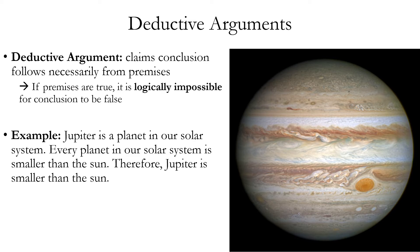Here's an example. Jupiter is a planet in our solar system. Every planet in our solar system is smaller than the sun. Therefore, Jupiter is smaller than the sun. This argument does happen to be logically valid — it's necessary that if the premises are true, the conclusion is true — so that's a clear indicator that it is a deductive argument. However, also be on the lookout for arguments which try to be valid but which fail; that would be an example of an invalid deductive argument.